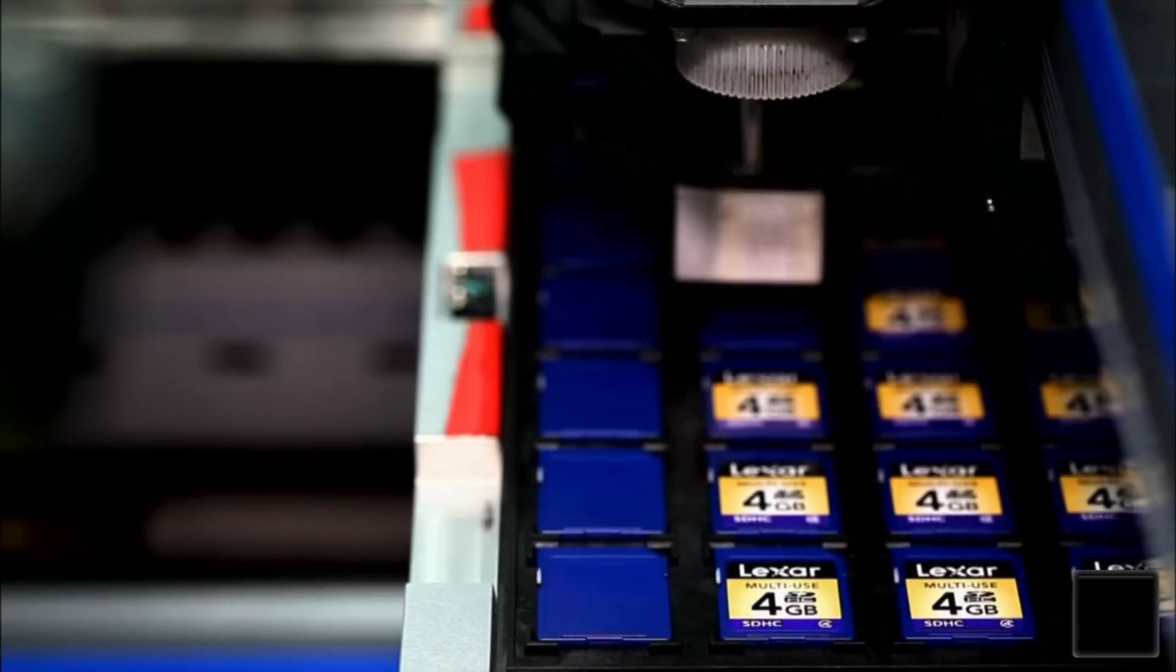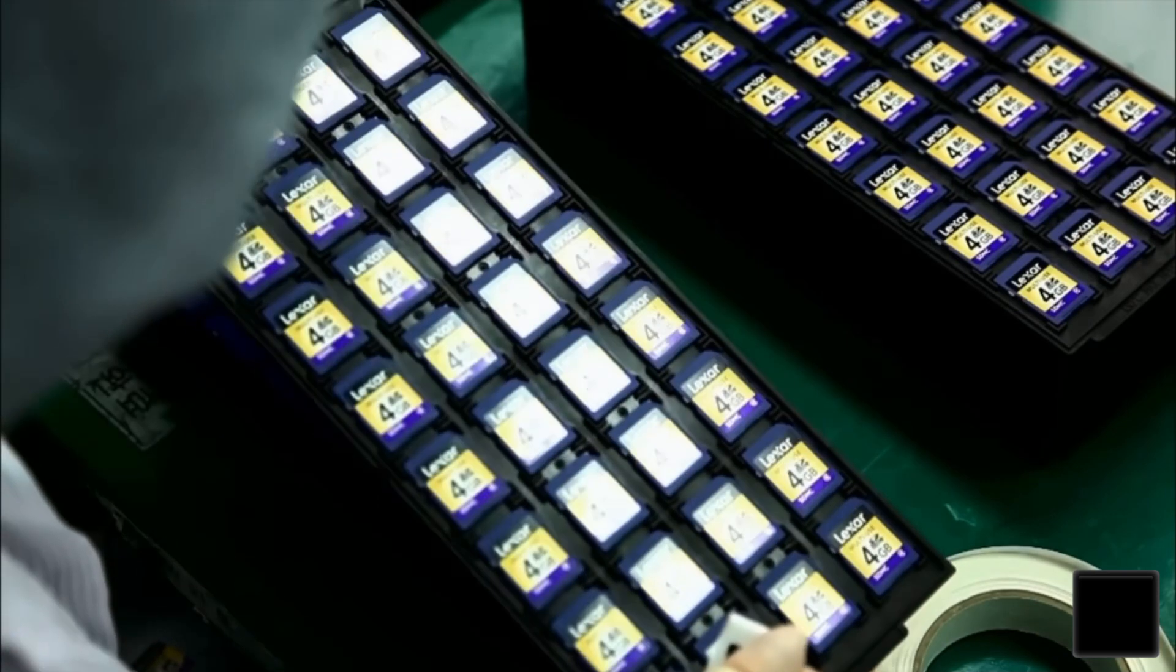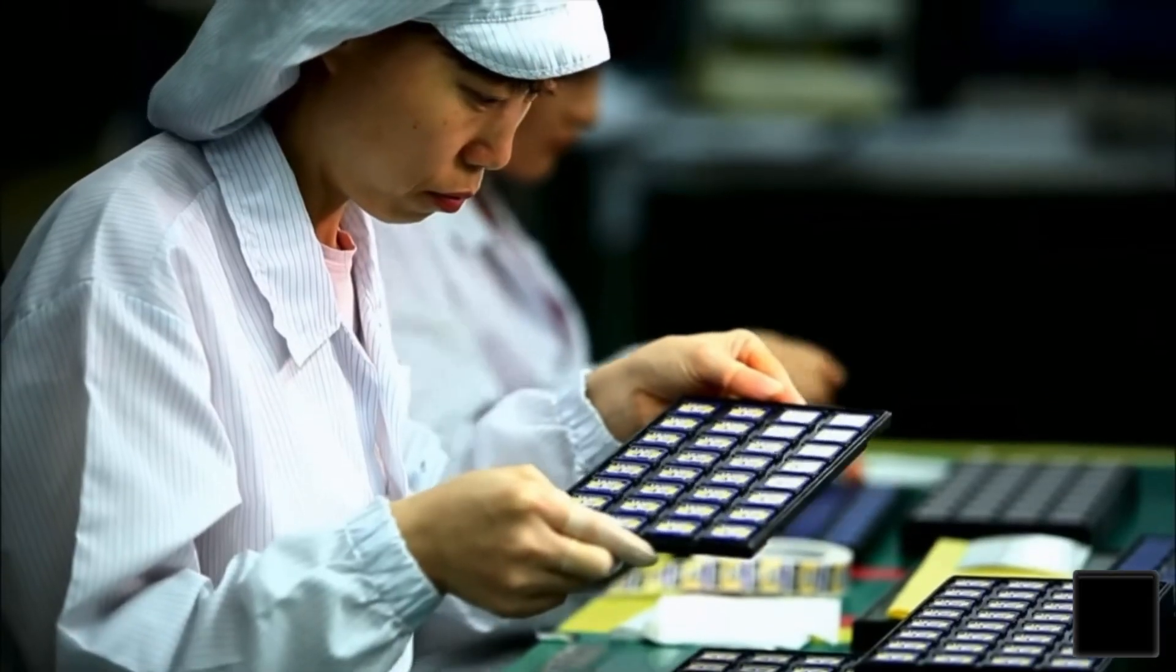They're assembled and labeled just like the compact flash cards. When the finished memory cards come off the assembly line, workers conduct a final visual inspection.